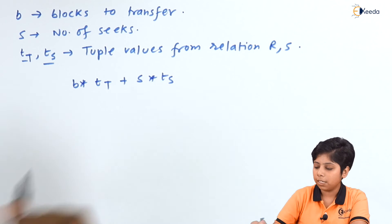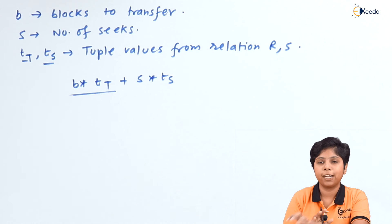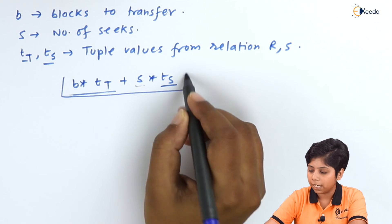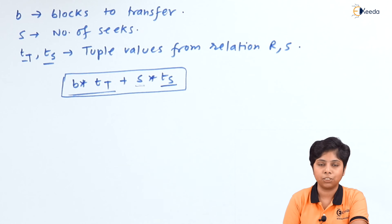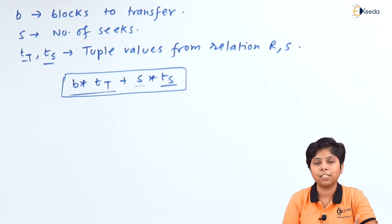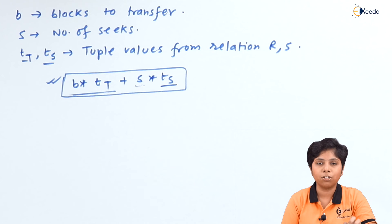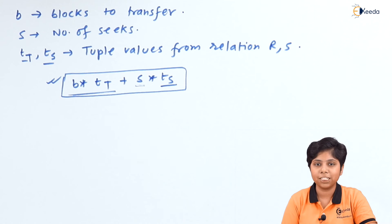Here t_T is the tuple transfer time — the block already in memory that doesn't need disk seeking — and t_S is the seek time for each tuple stored on disk. This gives the total seconds for disk block transfers. The next measure is response time. The CPU may have many I/O functions and scheduling functions to consider alongside block transfers and seeks, so the response time is the time the CPU waits for a block to be transferred and seeked from disk.